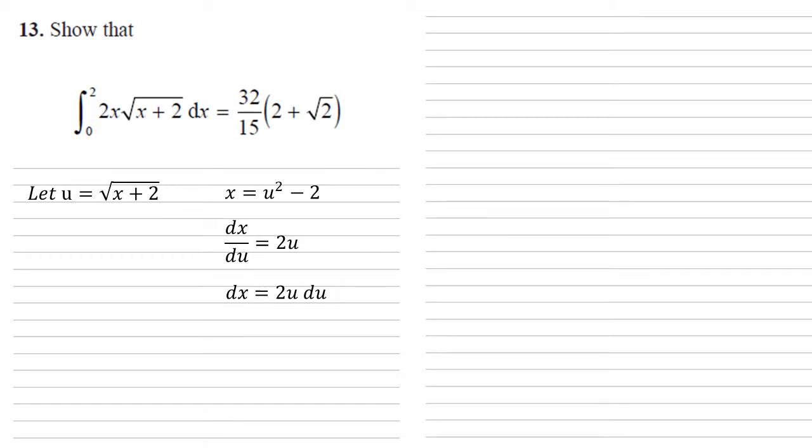Now when we're integrating by substitution, we also need to change our bounds. And we do this by putting the old x bounds into our equation for u. So when x is 0, u is equal to the square root of 2. And when x equals 2, u is equal to 2.